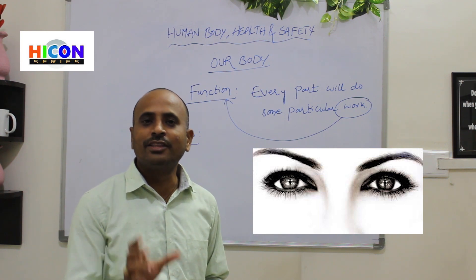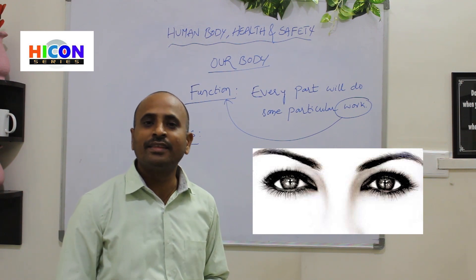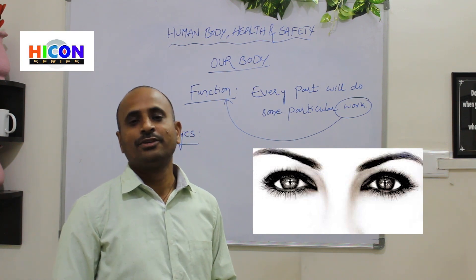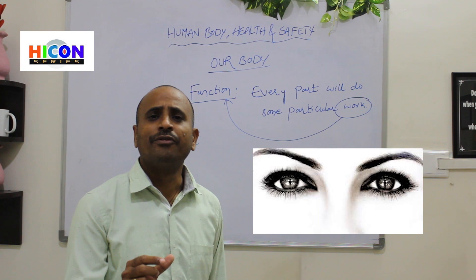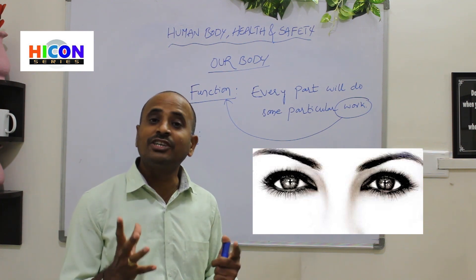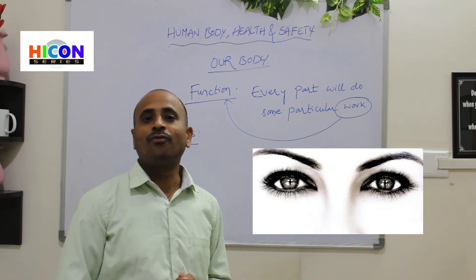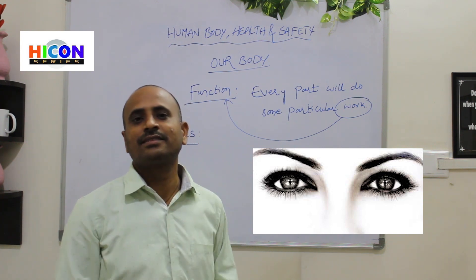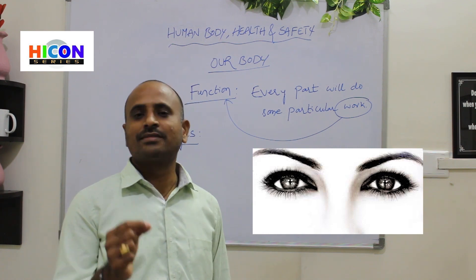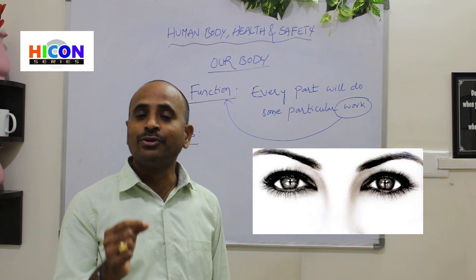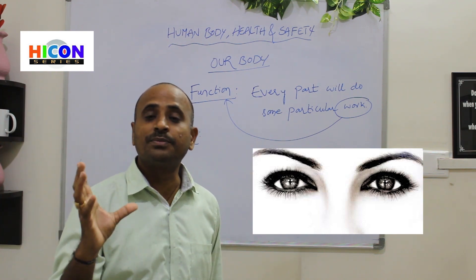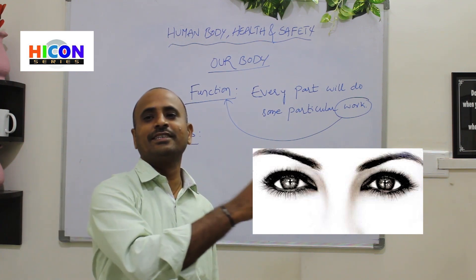Children, look at the picture. What are they? Yes, the picture contains eyes. So every human body will have two eyes. What is the function of our eyes? What work can we do with our eyes? Can anybody tell me? Eyes are used to observe the surroundings around us, and to observe various things around us.